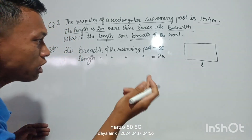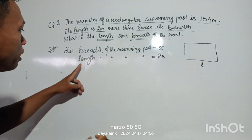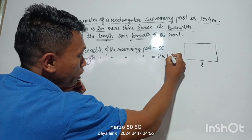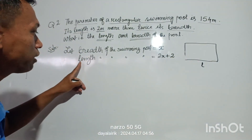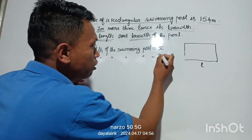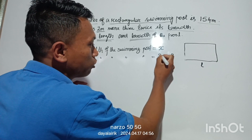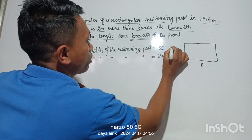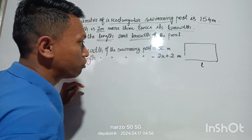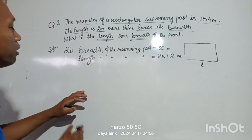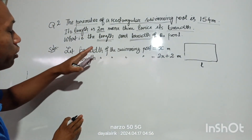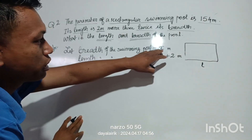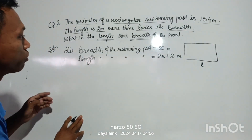Twice x is the length, so it is 2x. So the length is 2x plus 2 meters. The breadth is x meters.